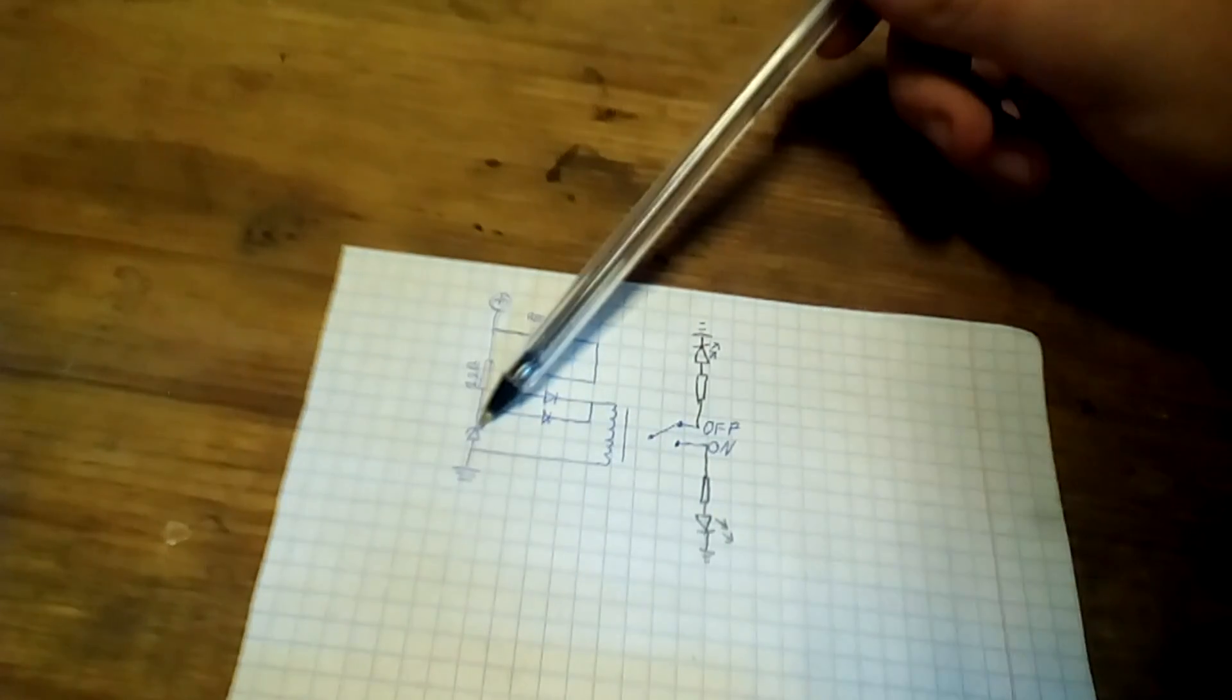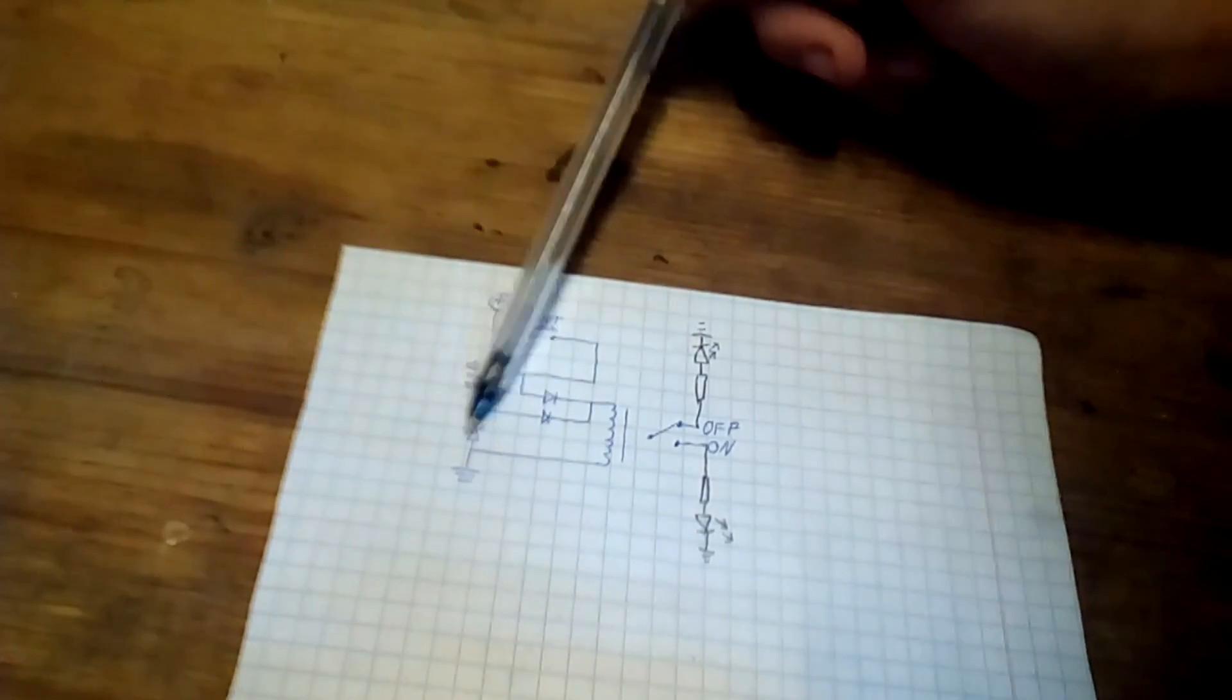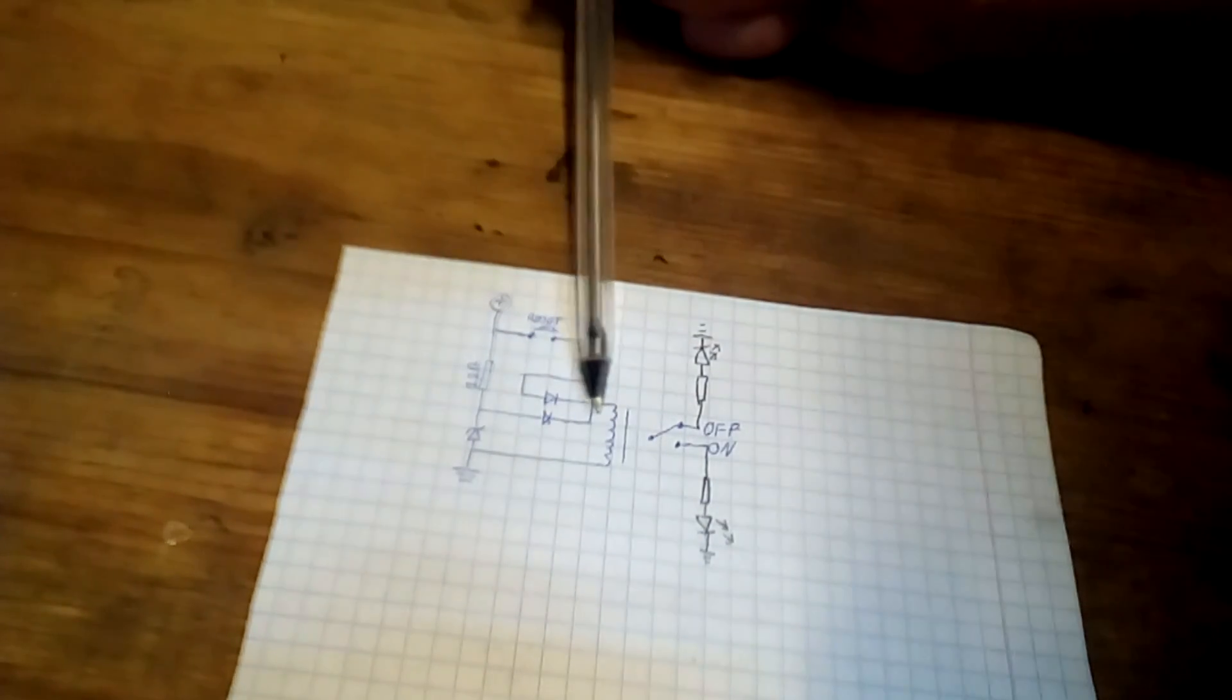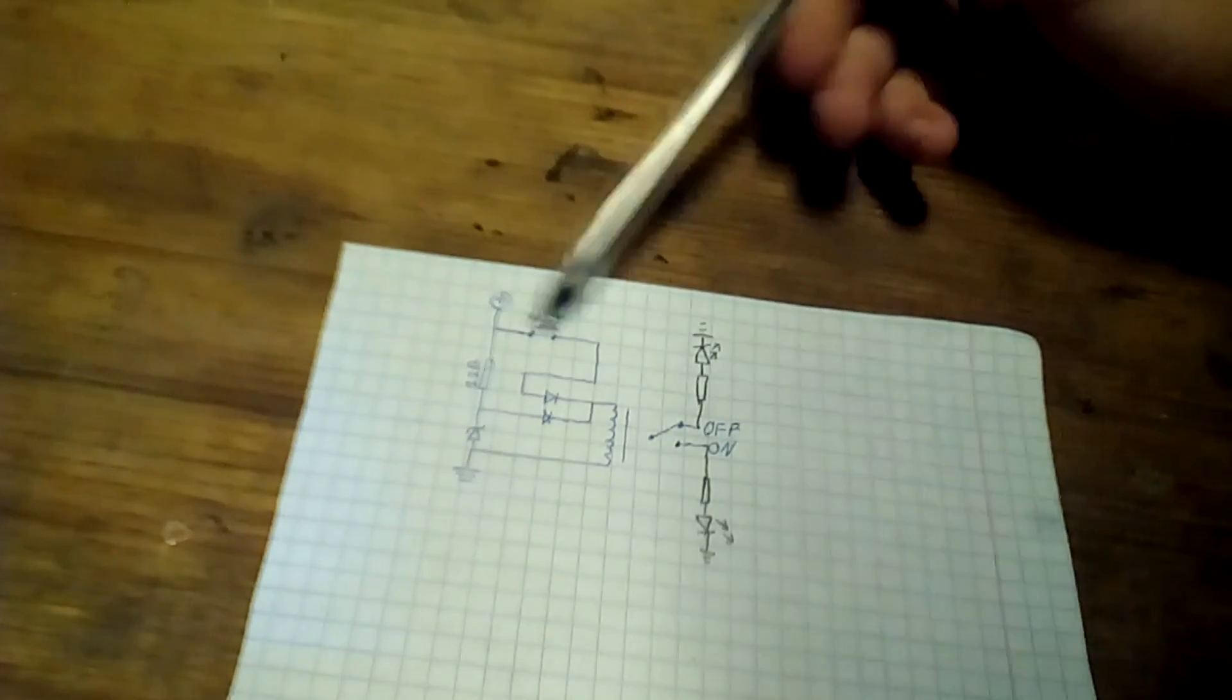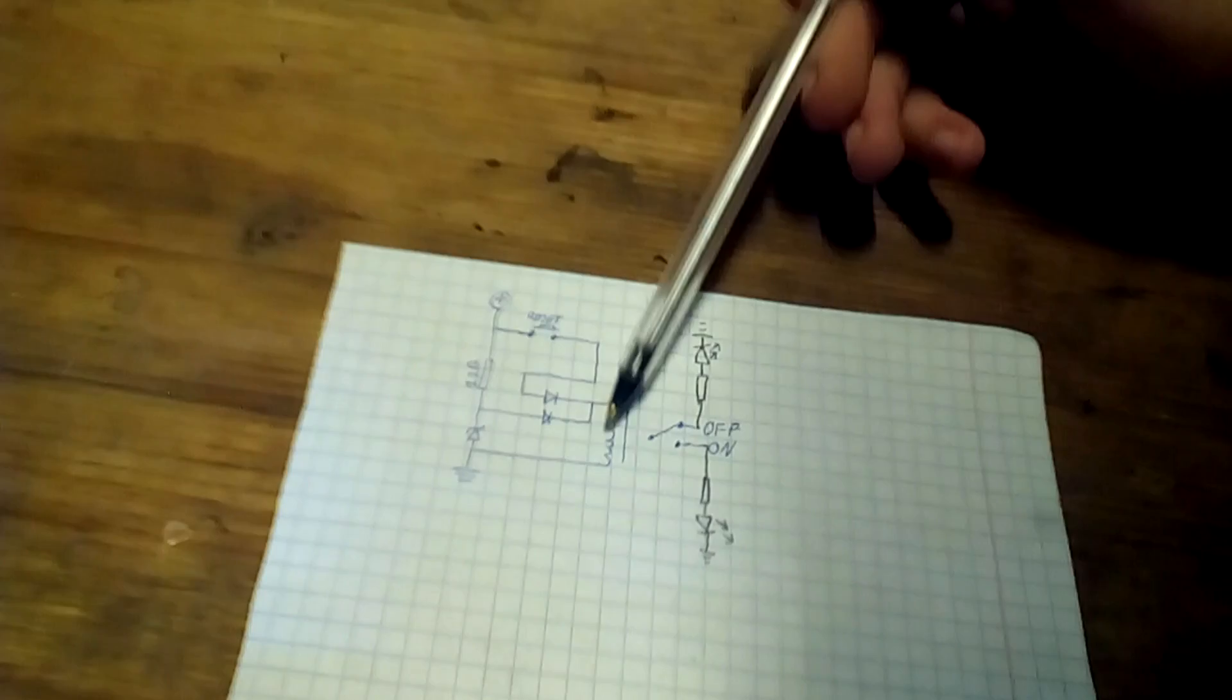This works like that. This 6.3 volt Zener diode regulates voltage there to the relay coil. But it's not enough to close the contacts.